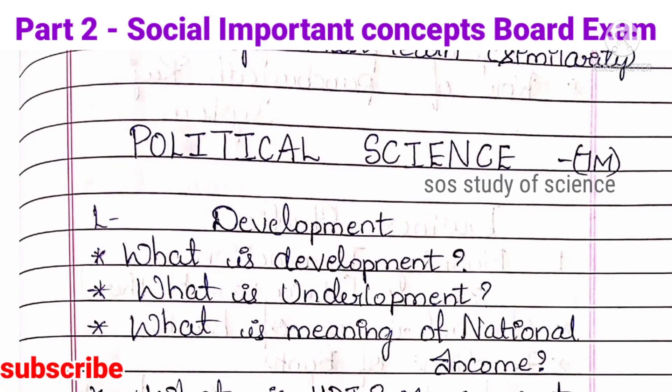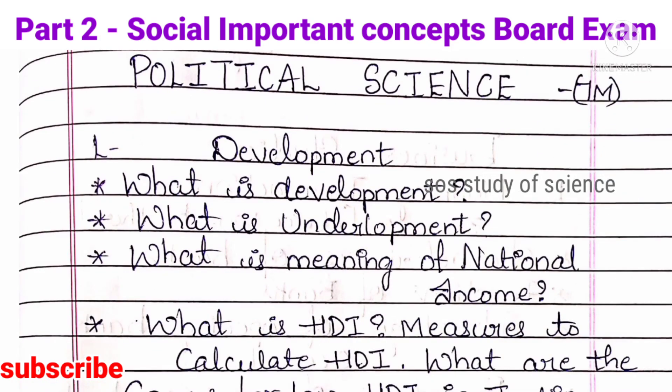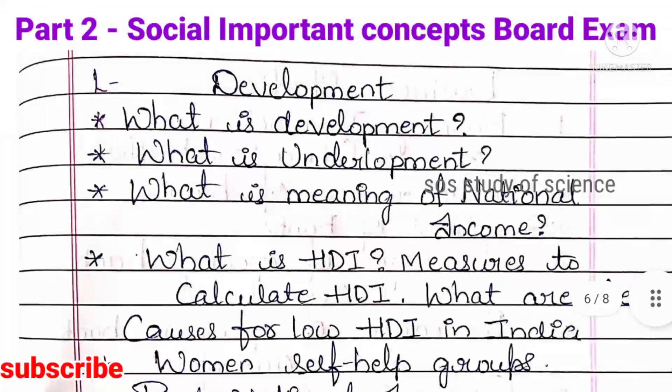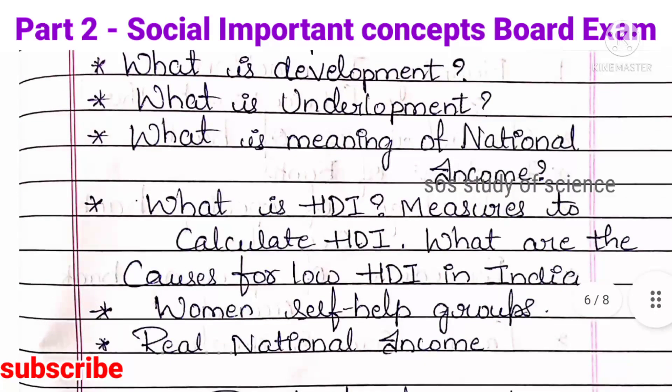Moving to political science — totally 7 marks is allotted. The first lesson is Development. Here you can expect: What is development? What is underdevelopment? What is the meaning of national income? What is HDI? Measures to calculate HDI? What are the causes for the low HDI in India? And also women's self-help groups and real national income. Study these concepts — they are very important.